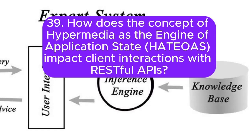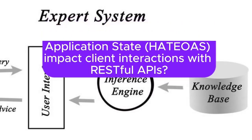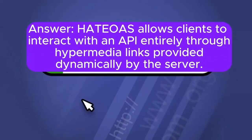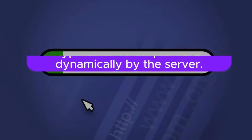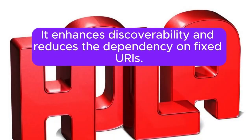Question 39: How does the concept of HATEOAS impact client interactions with RESTful APIs? HATEOAS allows clients to interact with an API entirely through hypermedia links provided dynamically by the server. It enhances discoverability and reduces the dependency on fixed URIs.